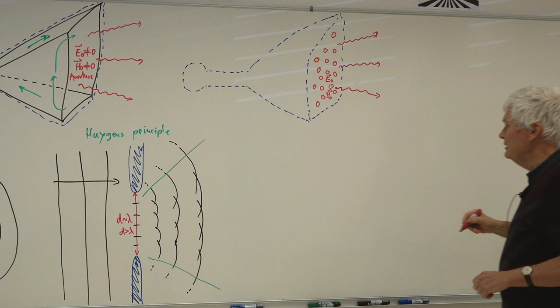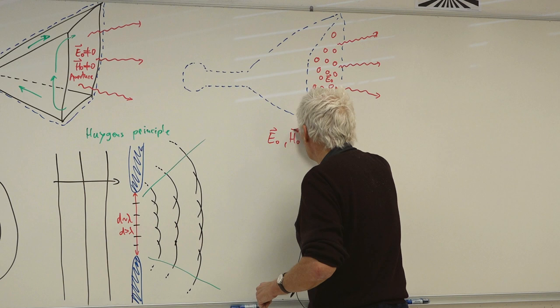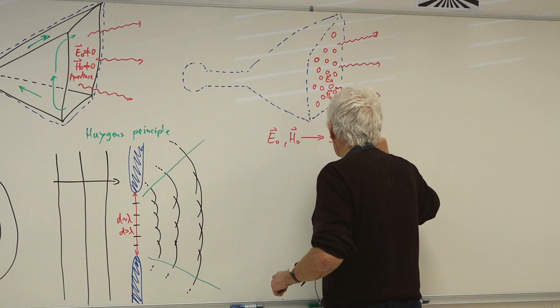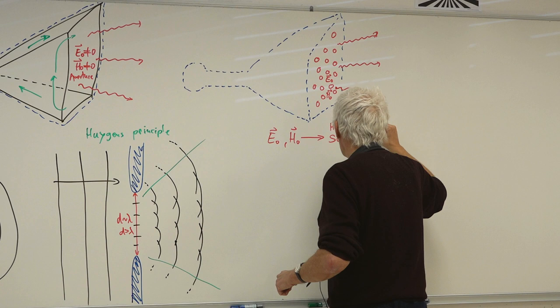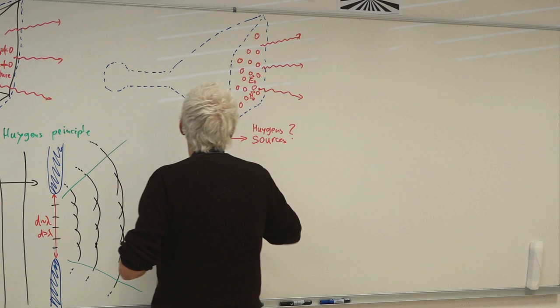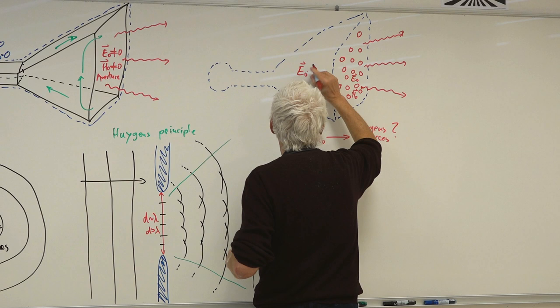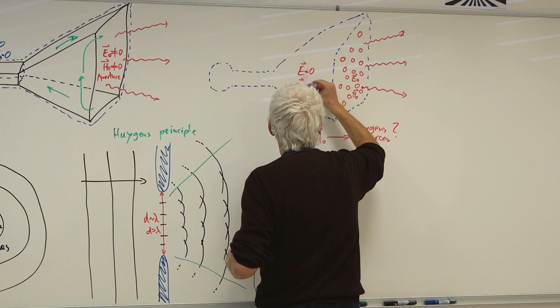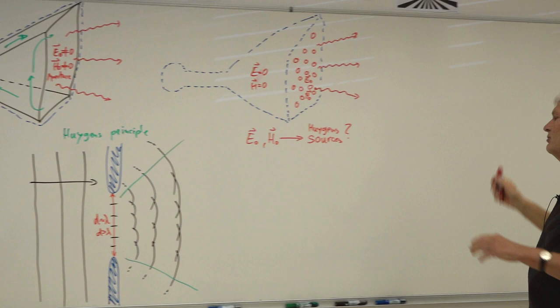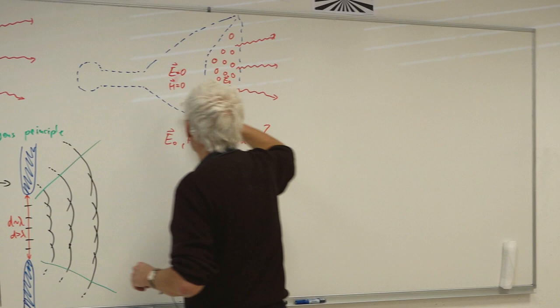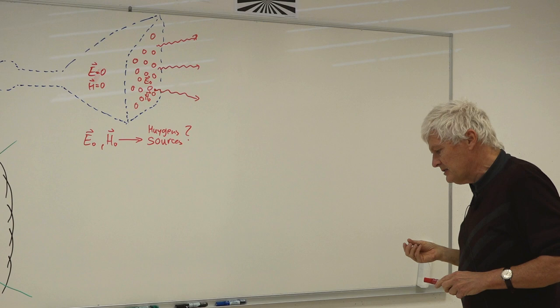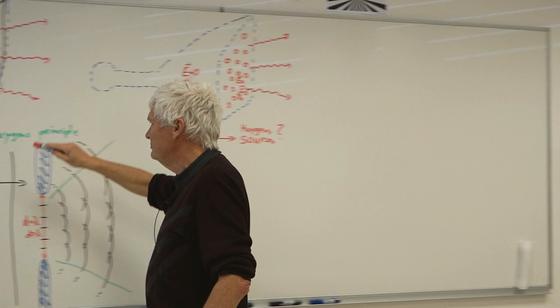I need to find a way to convert the field E₀ and H₀ on the aperture into Huygens sources. These sources should replace the field: when I remove the antenna, I have zero field inside. Inside E equals zero and H equals zero. I must place substitution — equivalent replacement sources — on the surface that is actually radiating.